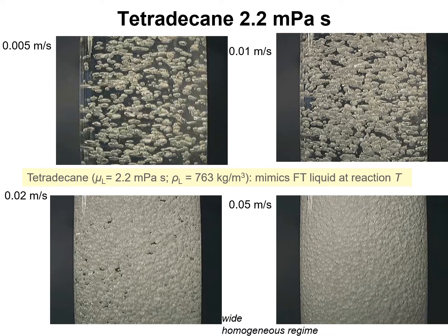Increasing the gas velocity to 1 centimeter per second — again, uniform bubbly flow. At 2 centimeters per second — uniform bubbly flow. At 5 centimeters per second — uniform bubbly flow with many bubbles visible. So the homogeneous flow regime prevails from 5 millimeters per second to 5 centimeters per second for tetradecane.